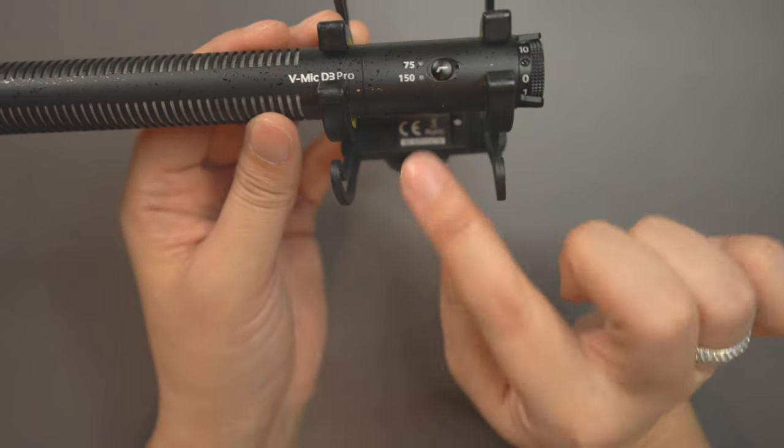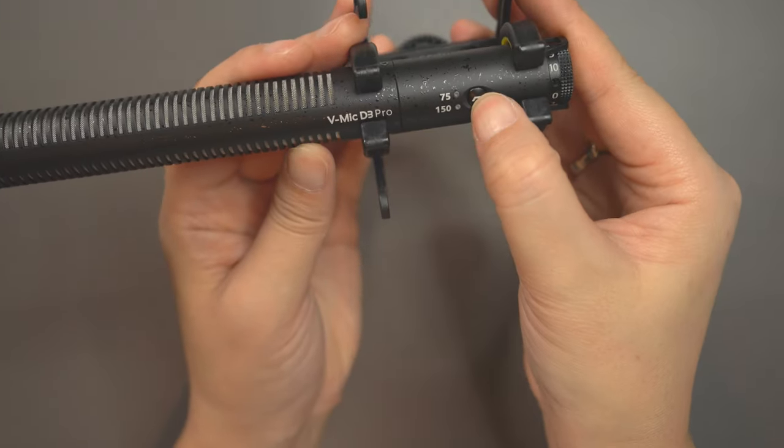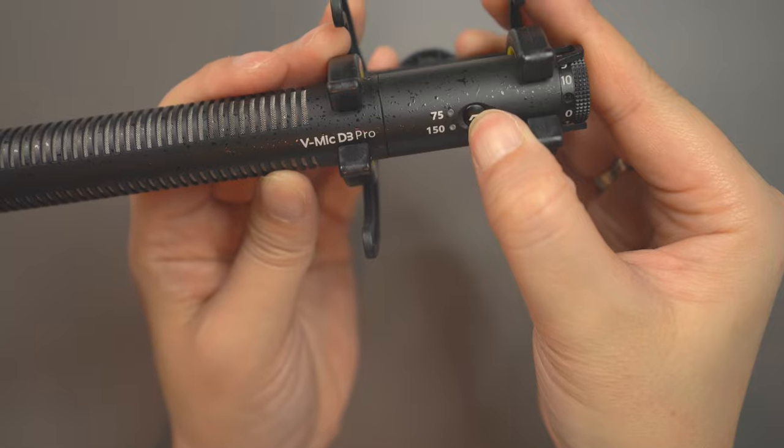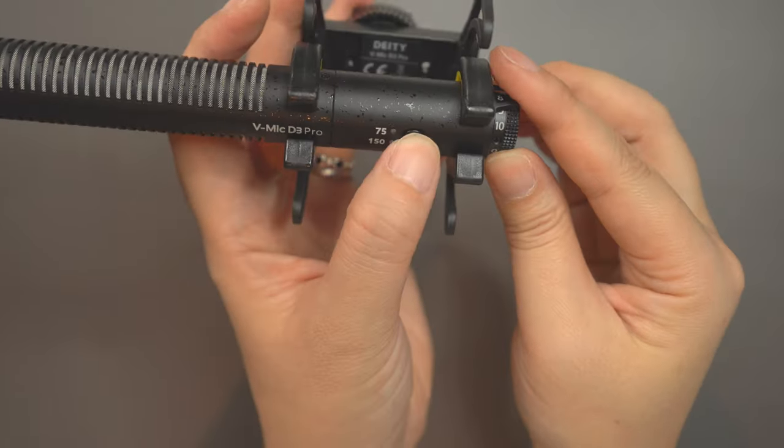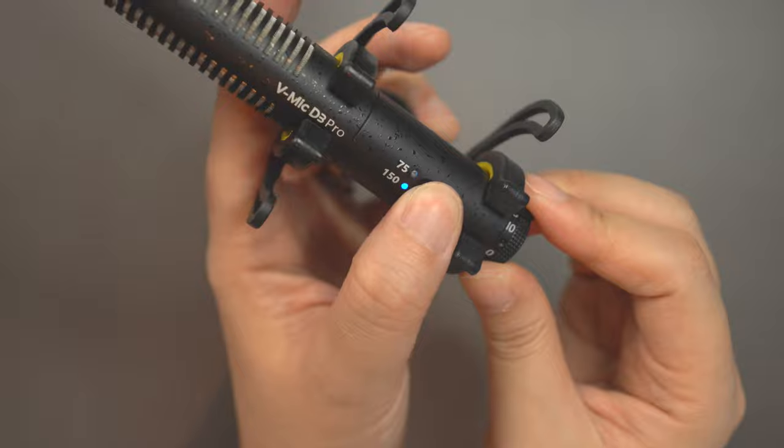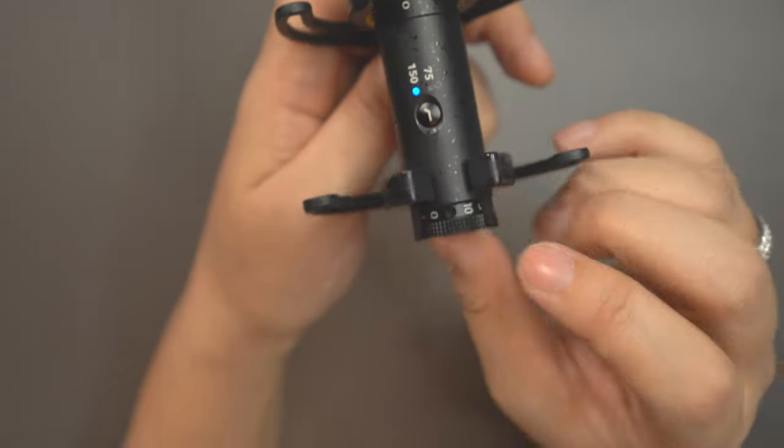Once the mic is on, you push and hold that button. Then with one push of a button you can change it from 75 hertz to 150 hertz.